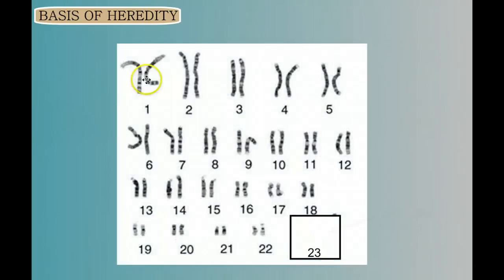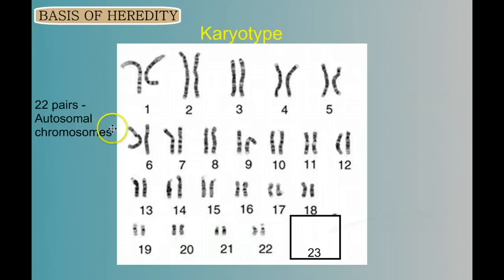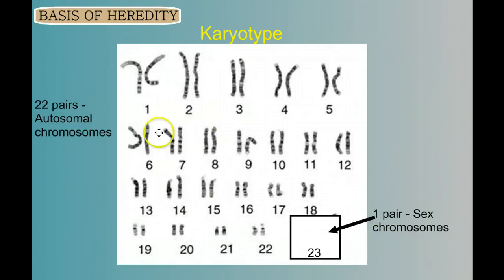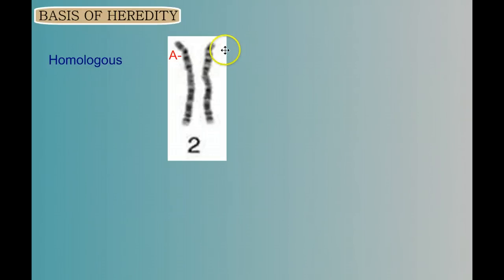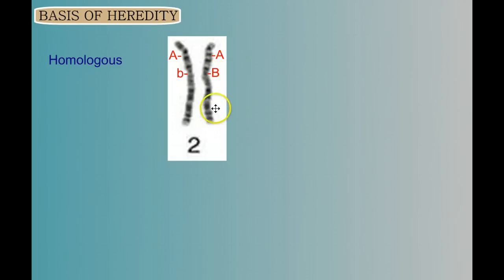This is a picture showing the chromosomes — we call this a karyotype. We can see the first 22 pairs, chromosomes 1 through 22, are our autosomal chromosomes, and the last pair, which I've covered up, are our sex chromosomes. Let's look at chromosome pair number 2 more closely. These two chromosomes are homologous — you received one from your mother and one from your father. If there's an A gene at a locus on one chromosome, there has to be an A gene at the corresponding locus on its homolog. They don't have to be the same version — they're homologous, but not identical.